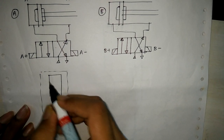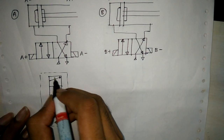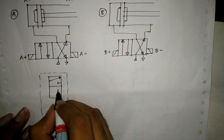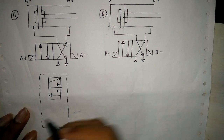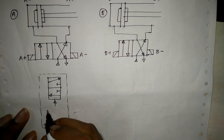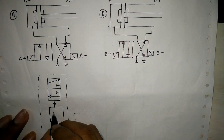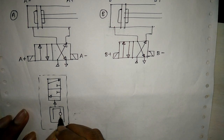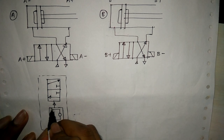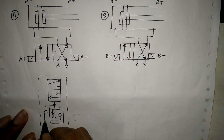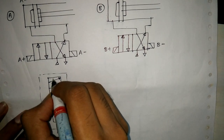Draw this 3/2 valve as a close valve. This is the symbol for delay — it is a very complicated one and it has a spring.